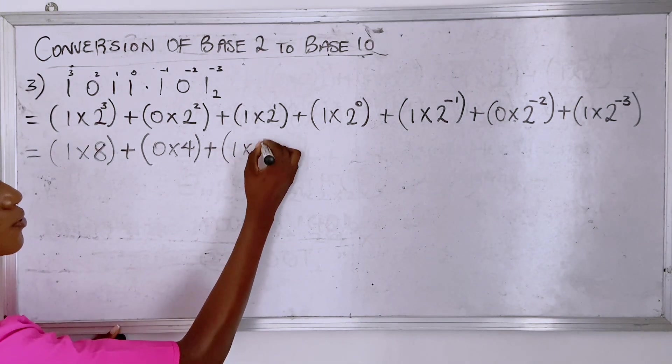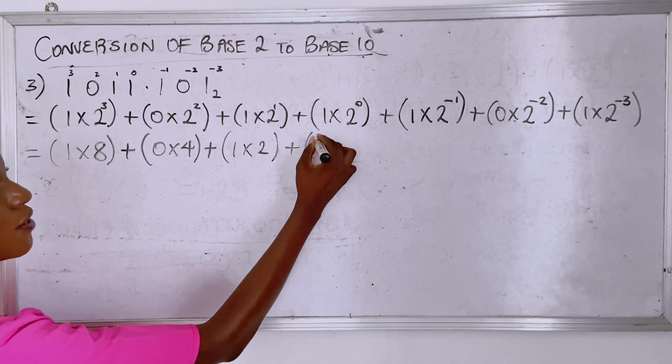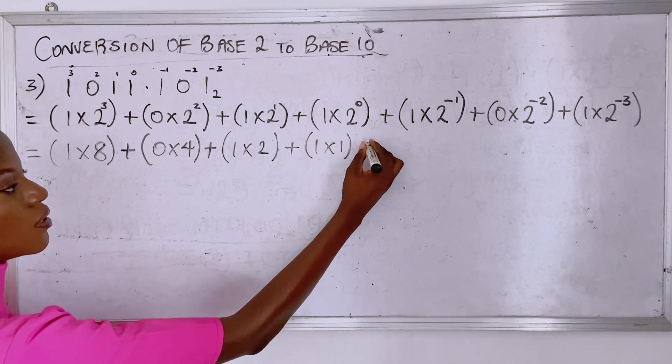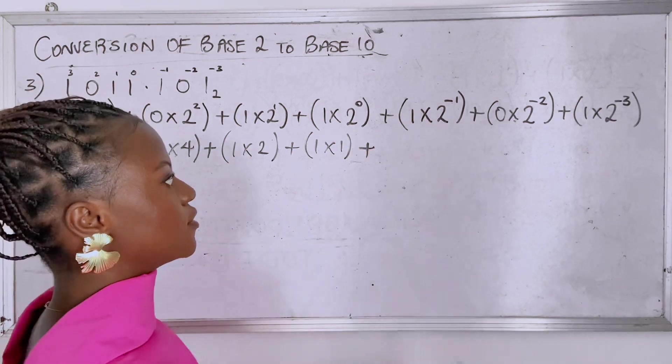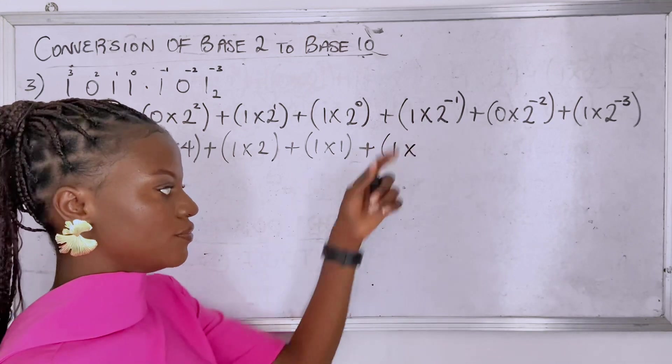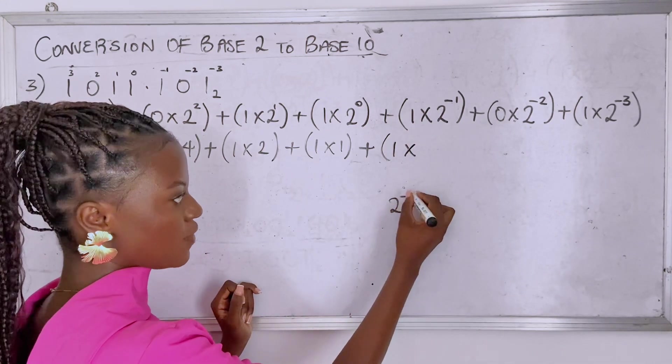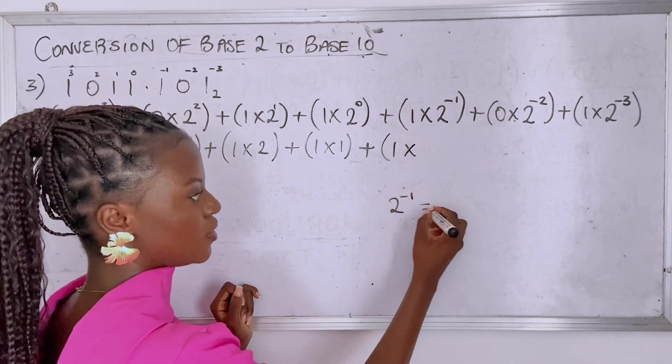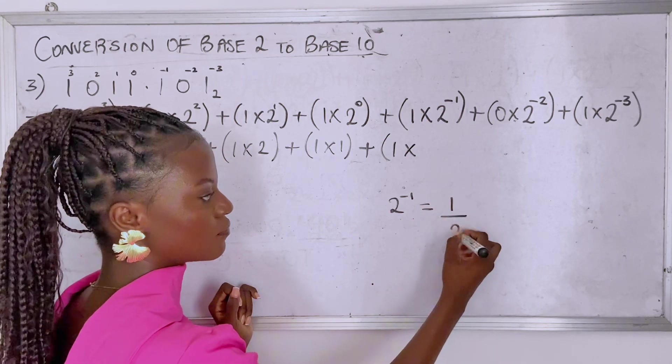Then you have one times two, and then you have one times one. If you have anything like this in mathematics, it means one over that thing.